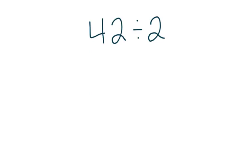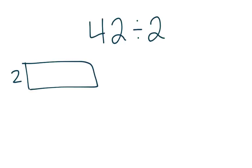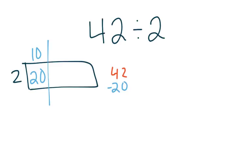So here we have a problem: 42 divided by 2. Yesterday what we did to solve this problem was we drew our rectangle, we placed our 2 on one side, and we had our total of 42 that we were going to take away from. We thought to ourselves, 2 times what gets me close to 42 without going over. So maybe you thought about 2 times 10, which gives you 20, and you would take 20 away from your total and be left with 22.